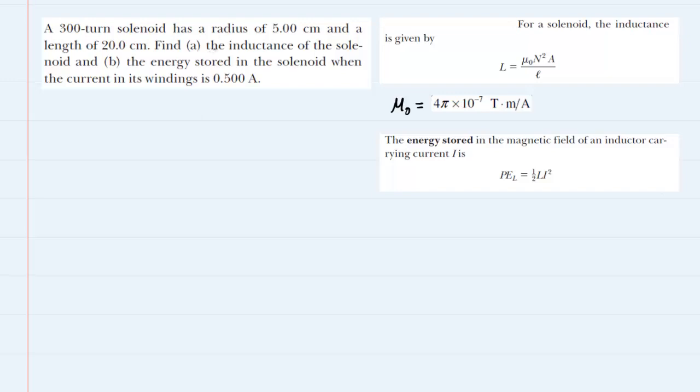In part A of this question, we are asked to calculate the inductance of a solenoid. We know that the solenoid is 300 turns, symbolized by capital N, has a radius of 5 centimeters (lowercase r), and a length of 20 centimeters (lowercase l).